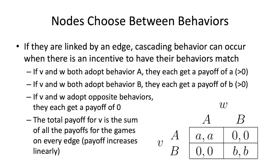This should hopefully bring together both ideas of information cascades and network effects into the actual social network. The first idea is thinking about someone in a network linked to other people. If two people are linked together, it's possible there can be a cascade if there's an incentive for those two people to have their behaviors match.